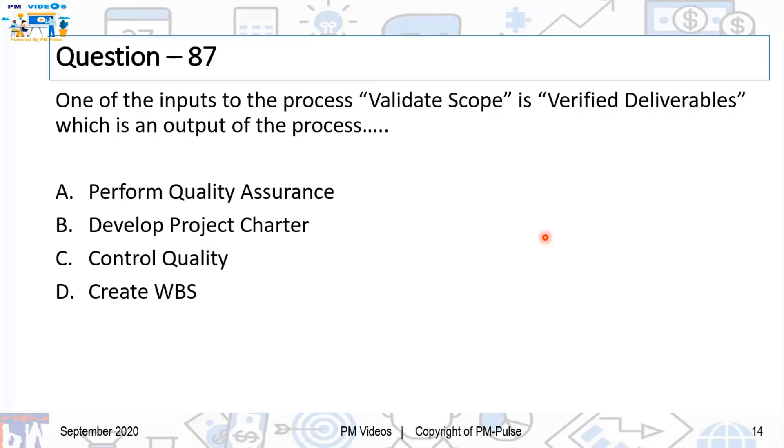One of the inputs to the process validate scope is verified deliverables, which is an output of the process.